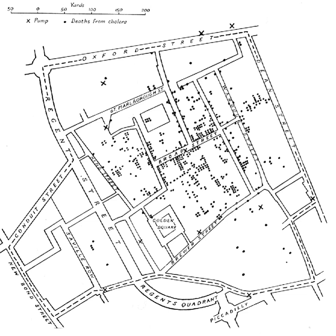Spatial analysis confronts many fundamental issues in the definition of its objects of study, in the construction of the analytic operations to be used, in the use of computers for analysis, in the limitations and particularities of the analysis which are known, and in the presentation of analytic results. Many of these issues are active subjects of modern research. Common errors often arise in spatial analysis, some due to the mathematics of space, some due to the particular ways data are presented spatially, some due to the tools which are available.